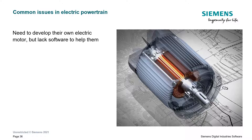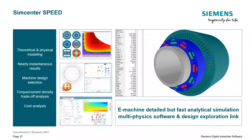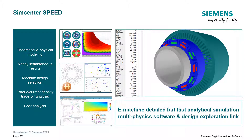Another issue some teams face when wanting to develop their own electric motor is that they lack software to aid in their design. That's where SPEED can help with upfront machine sizing. Its strengths are that its simulations are very fast since it uses an analytical approach, it has strong connectivity to Simcenter Star CCM Plus for advanced engineering applications, and HEEDS is built in for automated design exploration studies.